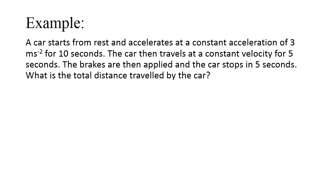Now let's move to a more advanced example. A car starts from rest and accelerates at a constant acceleration of 3 metres per second squared for 10 seconds. The car then travels at a constant velocity for 5 seconds. The brakes are then applied and the car stops in 5 seconds. What is the total distance travelled by the car? From the question, you need to identify three stages of motion. Stage one: 0 to 10 seconds (constant acceleration). Stage two: 10 to 15 seconds (constant velocity). Stage three: 15 to 20 seconds (car stops).